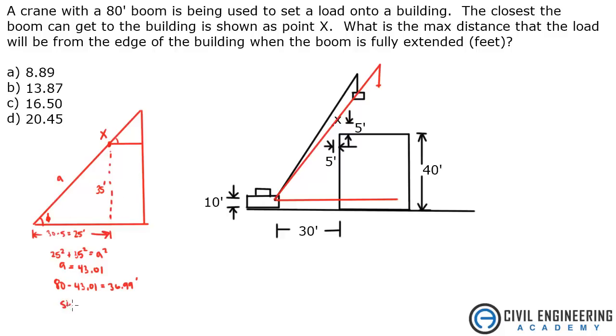So if we take the sine of phi, and that's going to equal 35 over 43.01. And I get a phi equal to 54.47 degrees.